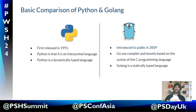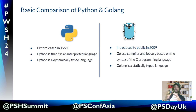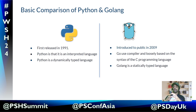Go almost looks like a C language. The next comparison is that Python is a dynamically typed language and Go is a statically typed language. That means in Go, before compiling, you have to define all the types of the variables. If you didn't define them, Go will throw an error before compilation.